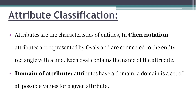Each oval contains the name of the attribute. Suppose student is an entity; the attributes are nothing but student number, student name, student marks, etc. Those oval shapes will contain student number, student name, and so on.